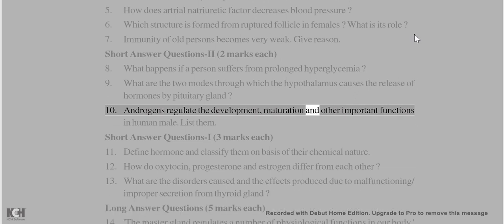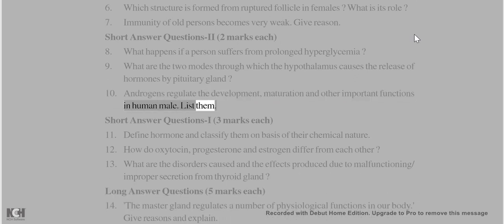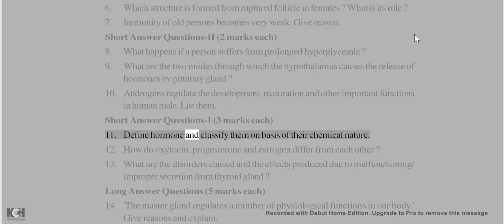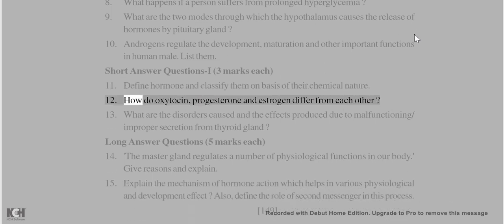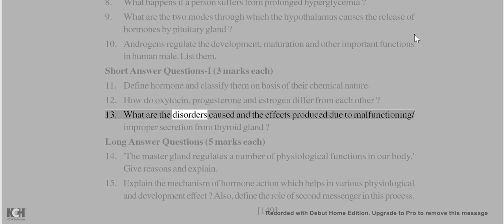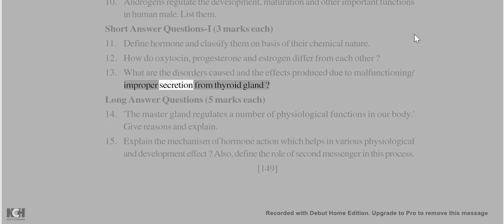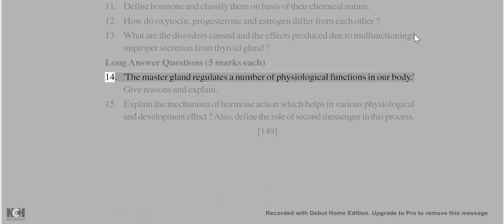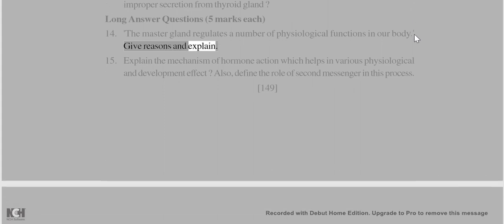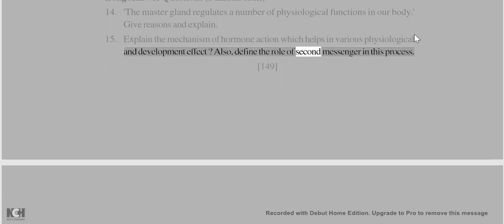Short Answer Questions (2 marks each): 8. What happens if a person suffers from prolonged hyperglycemia? 9. What are the two modes through which the hypothalamus causes release of hormones by the pituitary gland? 10. List the functions androgens regulate in human males. Short Answer Questions (3 marks each): 11. Define hormone and classify them on the basis of chemical nature. 12. How do oxytocin, progesterone, and estrogen differ? 13. What are the disorders caused by malfunctioning of the thyroid gland? Long Answer (5 marks): 14. Explain how the master gland regulates physiological functions. 15. Explain the mechanism of hormone action and the role of second messengers.